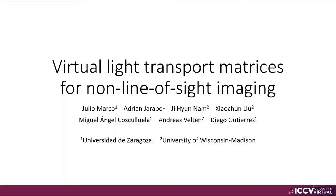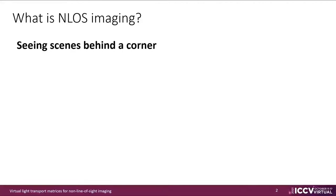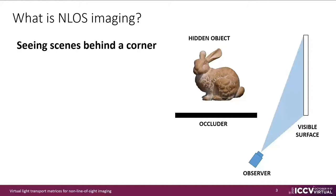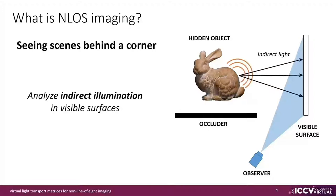Hello, my name is Julio Marco and I'm going to present our work: Virtually Transformed Matrices for Non-Line-of-Sight Imaging. Non-line-of-sight imaging methods aim to recover information from scenes that are not directly visible to an observer. The typical setup consists of a target scene hidden behind an occluder, and a surface visible to the observer. To recover information about the hidden scene, these methods analyze the indirect illumination at the visible surface produced by the hidden objects.